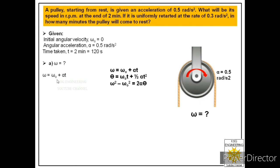Putting in the values: initial angular velocity is 0, alpha is 0.5, and time is 120 seconds. So omega equals 0 plus 0.5 into 120, giving us omega equal to 60 radian per second.